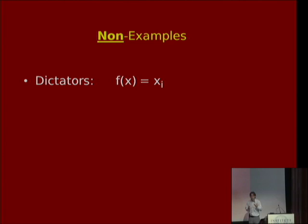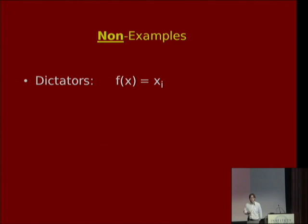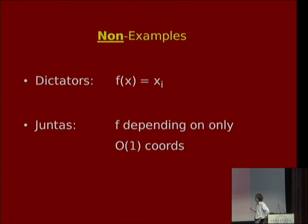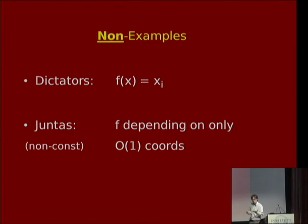It's also very important to look at non-examples. The canonical non-example of a quasi-random function has the fanciful name in computer science: dictators. You might call it a projection function. There are n such functions, one for each coordinate, and f of x equals x_i. The expectation of this function under a random x is zero, but you just have to fix that one coordinate and you can make the expectation either one or minus one — a constant jump. So this is definitely not quasi-random. More generally, functions called juntas, which only depend on a constant number of input coordinates, are similarly not quasi-random (assuming they're not constant).